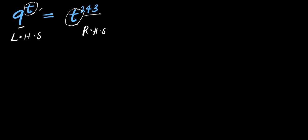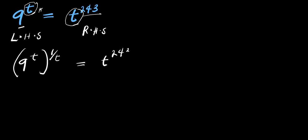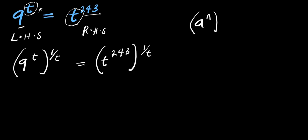That means we are going to eliminate this t. So we have 9 power t, and for us to eliminate it, we raise this to the power of 1 over t, and we do the same thing here — we have t power 2/3, and we raise it to the power of 1 over t. Now if you have a power n raised to the power of m, it equals a power n times m.